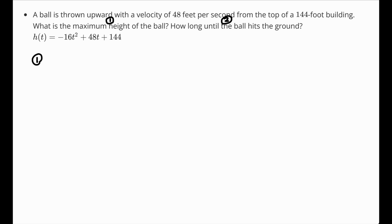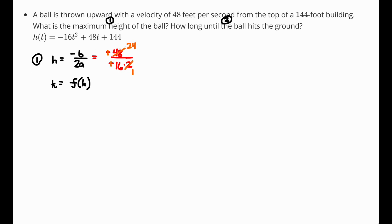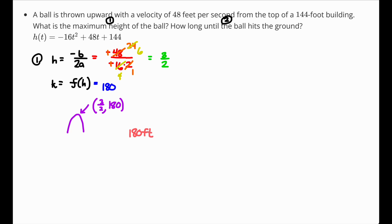To find the maximum height, find the vertex. h equals negative b over 2a equals negative 48 divided by 2 times negative 16. The negatives cancel, giving 48 over 32, which simplifies to 3 over 2. Then k equals f of h: plugging 1.5 into the function gives 180. So the vertex is at 3 halves, 180, and the maximum height is 180 feet.